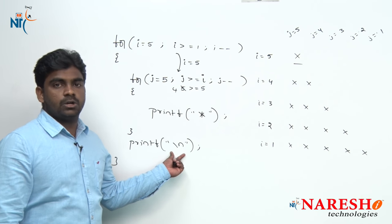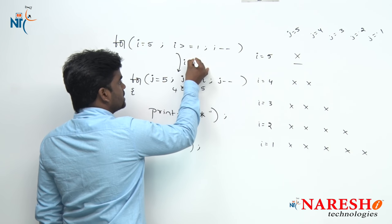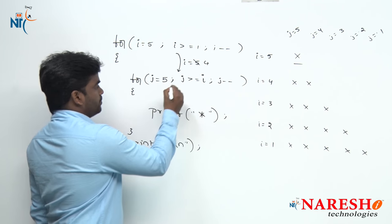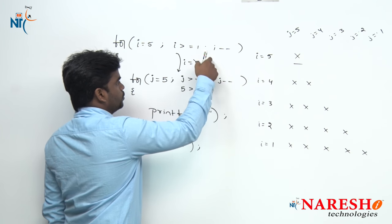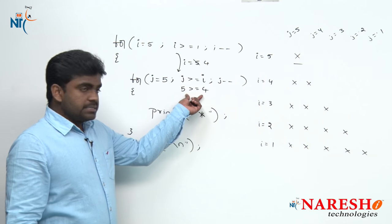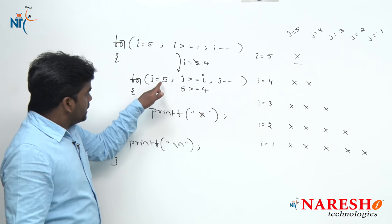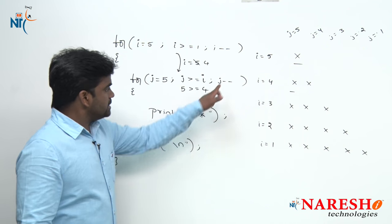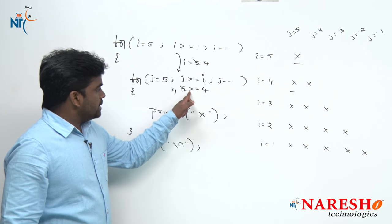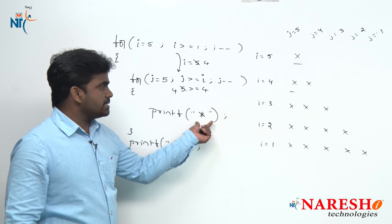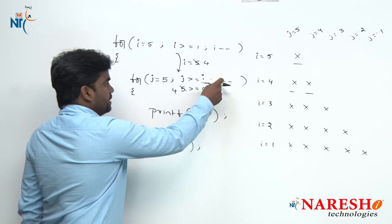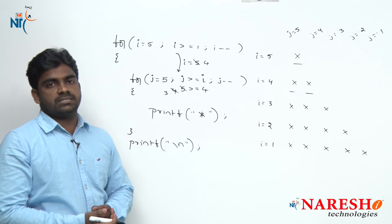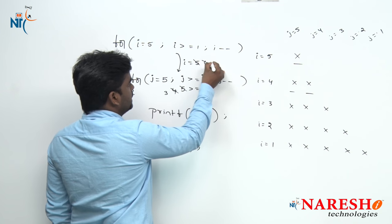Then here slash n will send the control to next line. Next i value decreases, i value becomes 4. Again j value starts with 5. 5 is greater than or equals to 4 — condition true — come inside, it will print this star. Next j value becomes 4. 4 is greater than or equals to 4 — again it will print. Second star it will print. Next whenever j value becomes 3, 3 is greater than or equals to 4 — condition has failed, it terminates.